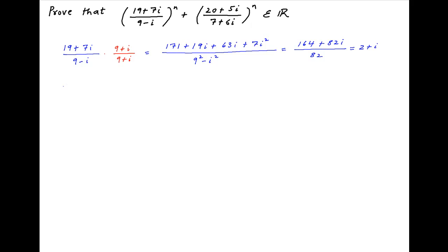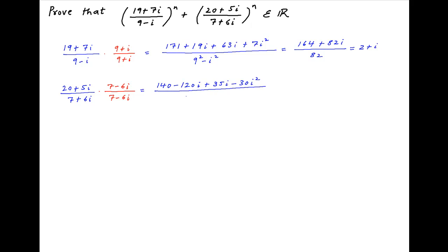Similarly, the complex number in the second term: 20 plus 5i divided by 7 plus 6i. We multiply this with the conjugate of the denominator, i.e. 7 minus 6i. Therefore, this number is equal to 140 minus 120i plus 35i minus 30i square divided by 7 square minus 6i whole square. i square is equal to minus 1, and therefore this expression is equal to 170 minus 85i divided by 49 plus 36, which is equal to 85. This simplifies to 2 minus i.